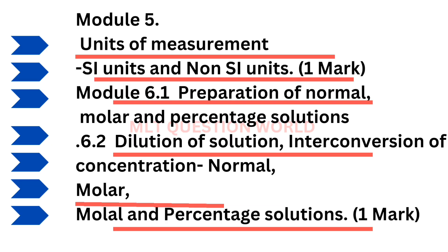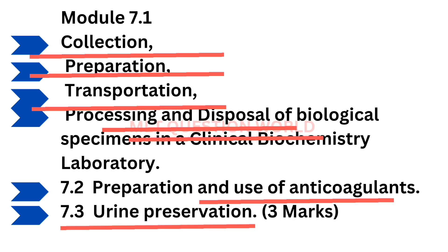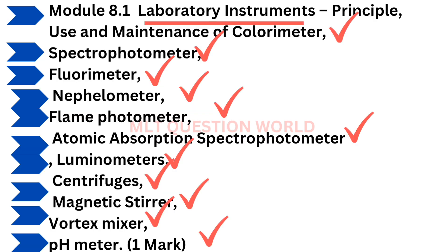Module 5: units of measurement, SI units, known SI units, preparation of normal, molar and percentage solutions, dilution of solutions, interconversion, concentration, molar and molal solutions. Then collection, preparation, transportation, processing and disposal of biological specimens in a clinical biochemistry laboratory, and preparation and use of anticoagulants.